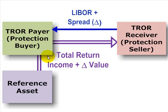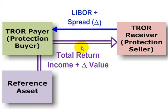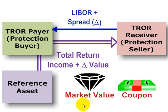In the total rate of return swap, the payer owns the underlying reference asset or obligation, which could be a bond, an index, loan, equities, even receivables. The payer is going to transfer or pay the total return on that asset to the receiver. So that includes both appreciation in the market value of that obligation and coupons, which are the income on that obligation.